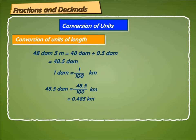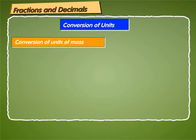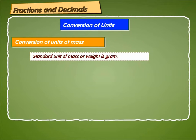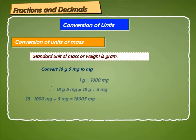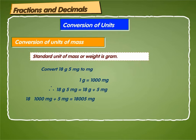Let us now move on to conversion of units of mass. We know that the standard unit of mass or weight is a gram. Let us convert 18 grams and 5 milligrams into milligrams. As we know, 1 gram is equal to 1000 milligrams. Therefore, 18 grams 5 milligrams is equal to 18 into 1000 milligrams plus 5 milligrams, or 18,005 milligrams.